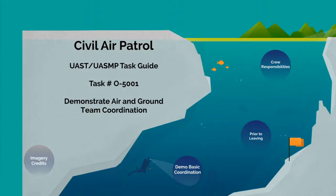Welcome to Task 0-5001: Demonstrate Air and Ground Team Coordination. This task is from the UAST-UASMP Task Guide published by the Civil Air Patrol. To begin, what crew responsibilities strongly impact the ability to coordinate your own team and to work well with multiple teams?